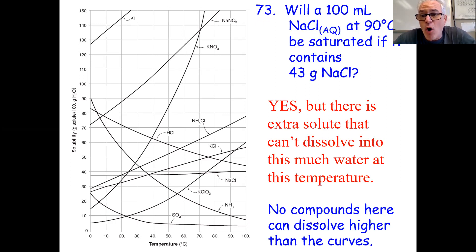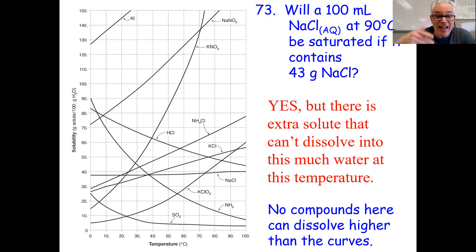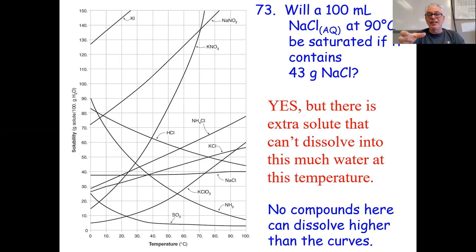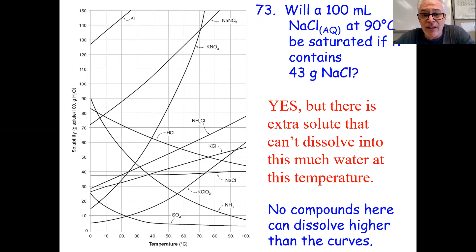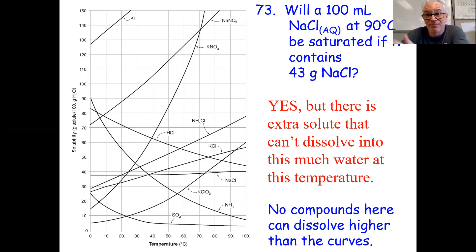Nothing on table G can hold more than the curves — that's the saturation point. You can't go over that. You can add more stuff, but it doesn't matter. If you have a glass that holds 8 ounces and you put 12 ounces of water in, only 8 stays and 4 ounces goes over the top. You can put 43 grams of sodium chloride into solution, but only 40 grams really goes in. The other 3 grams are just stuck at the bottom. Just keep swimming.